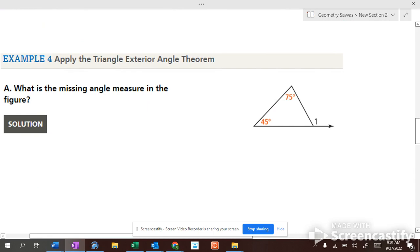How big is angle one, then? Do we have to figure out what this angle is? The answer is no. We just add up these two. What's 45 and 75 add up to? 120. Those add up to 120. So, what's left for this one? 60.